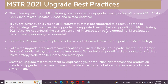When creating an upgrade — especially for the production environment — upgrade the test environment first. To get a test environment, duplicate your production environment and call it the test environment. Upgrade that first, upgrade your metadata, and then validate the upgrade on the test environment before applying it to your production environment.